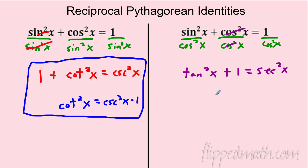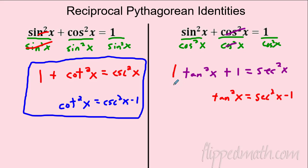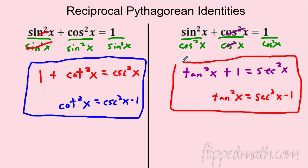So if you ever need to know what tangent² equals, move the one over and it's secant² − 1. You can build all these identities or memorize them — either way, box them up and circle them.